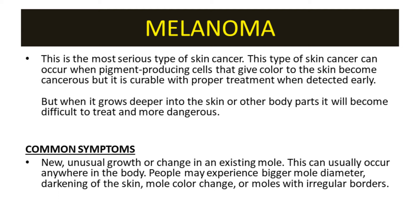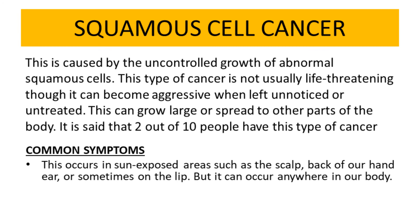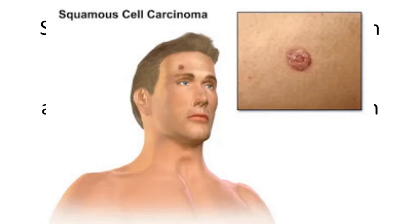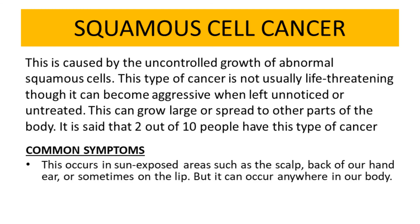People with melanoma may experience a larger mole diameter, darkening of the skin, color changes, or moles with irregular borders. The third type is squamous cell carcinoma, caused by the uncontrolled growth of abnormal squamous cells. This type is not usually life-threatening, though it can become aggressive when left unnoticed or untreated, and can grow large or spread to other parts of the body. It is said that two out of ten people have this type. It commonly occurs in sun-exposed areas such as the scalp, back of the hand, or lips, but can occur anywhere.